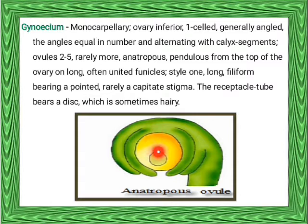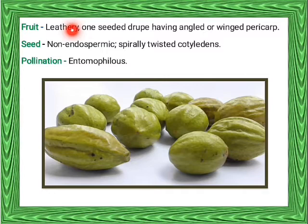Style one, long and filiform, bearing a pointed, rarely capitate stigma. The receptacle tube bears a disc which is sometimes hairy. Fruit is leathery. The endocarp of the fruit is hard and tough. One-seeded drupe having angled or winged pericarp is present.